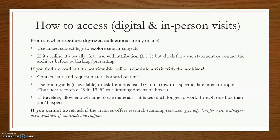If you see a reference to a record but no scans are available online, this is an indication that you will probably need to schedule a visit with the archive or request scans. Contact the staff using the information on their website. You will most likely need to request specific materials ahead of time — not the entire 60-box collection, but a specific subset such as boxes two through three. You will also want to request finding aids or box lists, and try to narrow your request to a specific date range or topic to make the most of everybody's time.